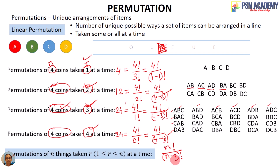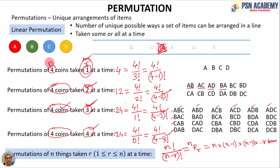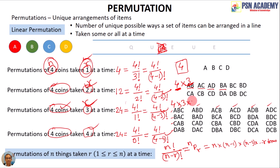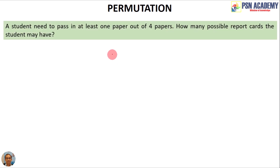This is written as nPr, which equals n × (n−1) × (n−2) × ... up to r terms. For example, if r=1 and n=4, we take only one term: 4. If r=2, we take two terms: 4×3. If r=3, we take three terms: 4×3×2. So the value of r denotes the number of terms starting from n towards 1.